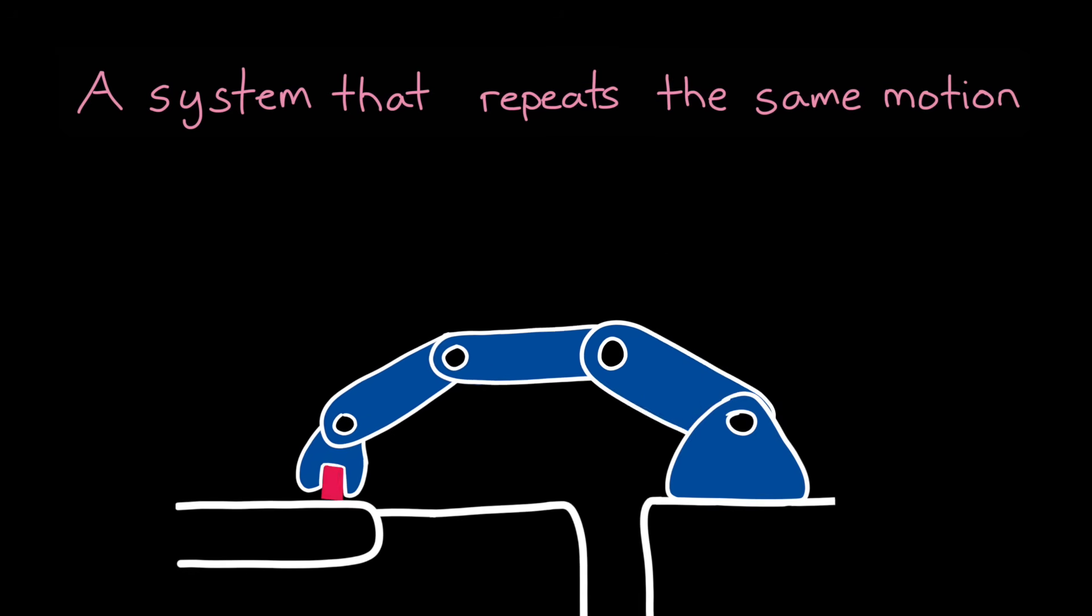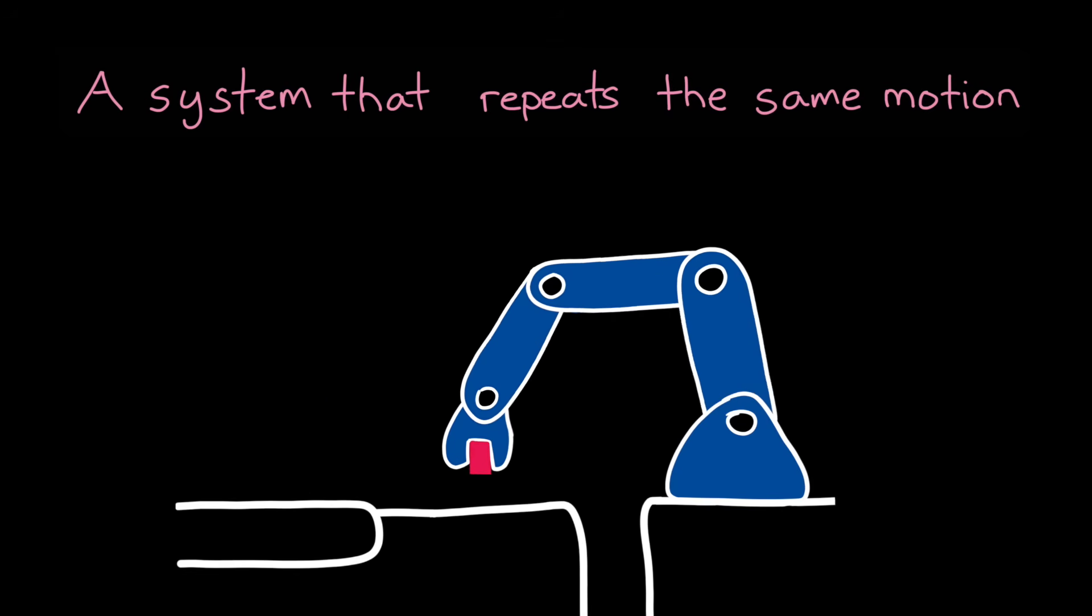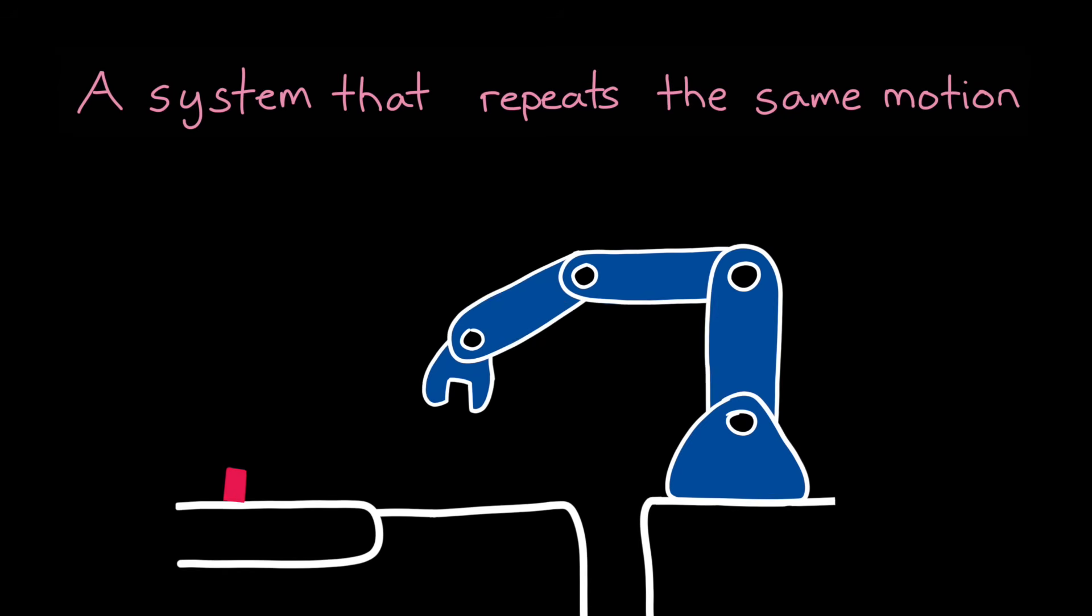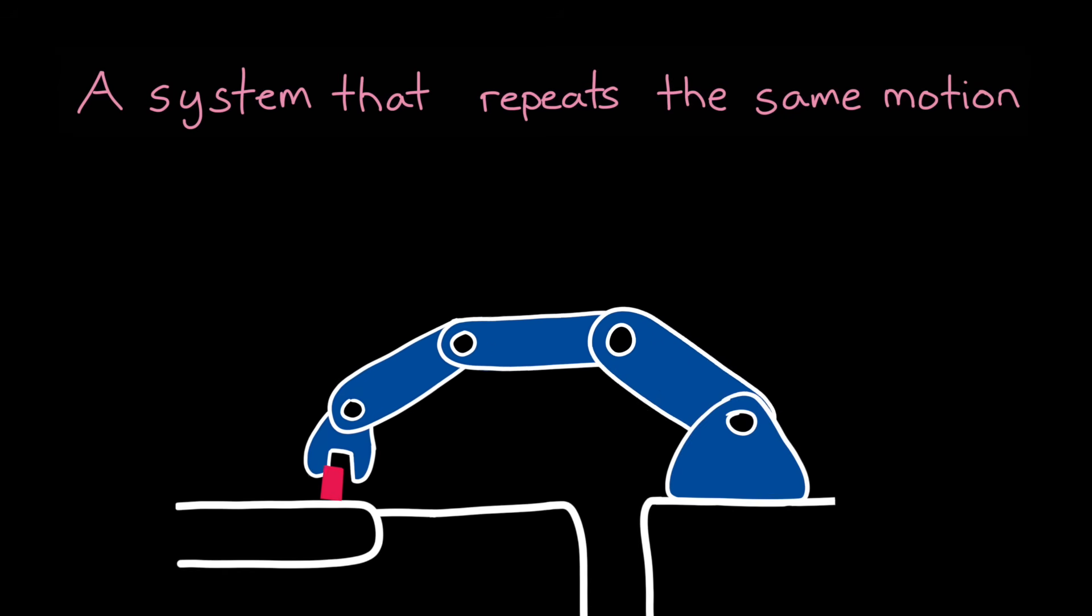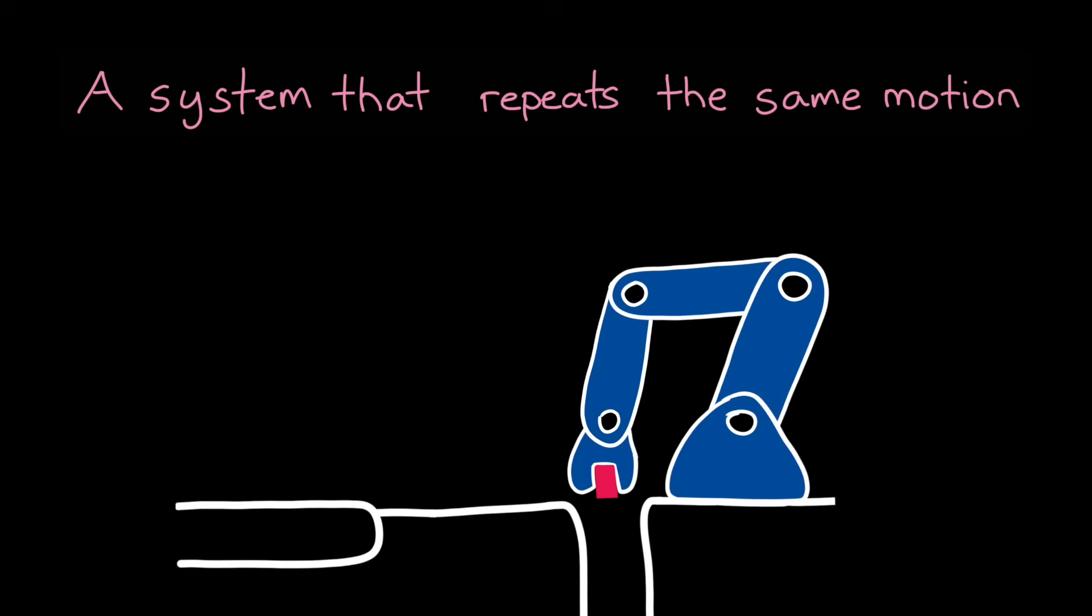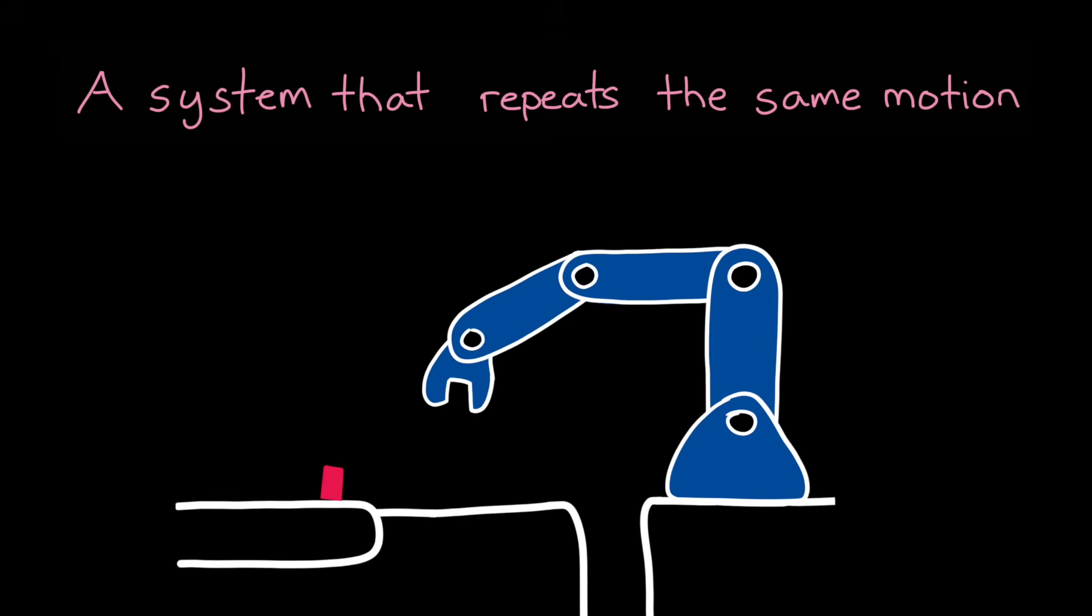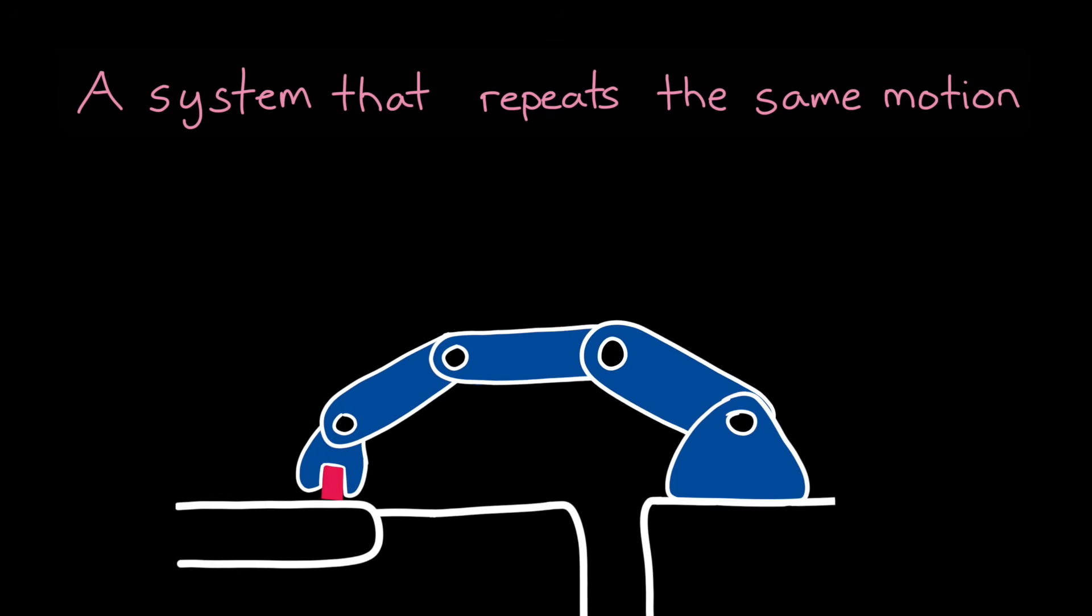After that, the whole sequence is repeated again. Now, since the path and the environment is the same every single iteration, we could learn the sequence of inputs to the actuators that moves this system perfectly along this desired path. And then we just execute those commands open loop, or feedforward.